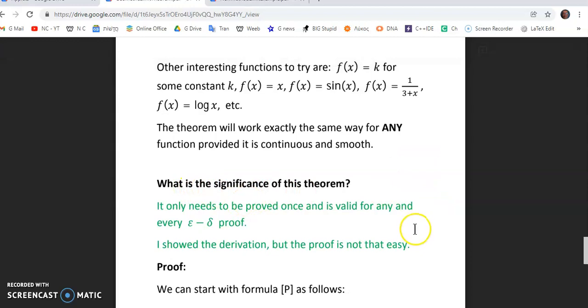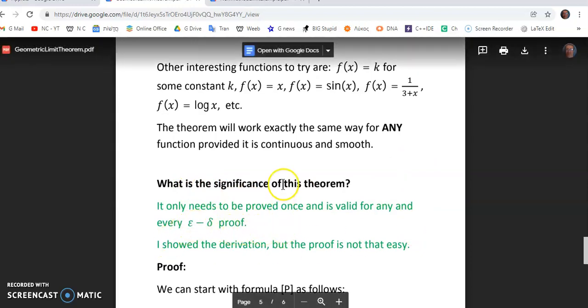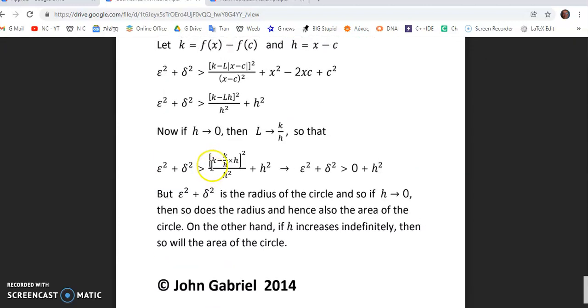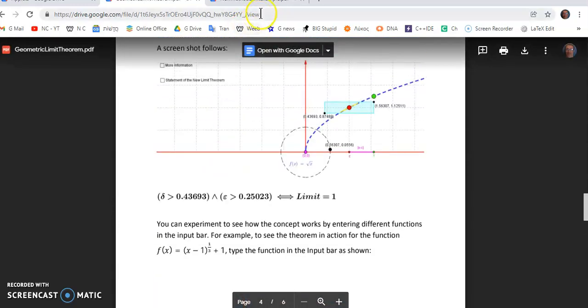The significance of this theorem is that it only needs to be proved once and is valid for every epsilon delta proof. The proof is easy if you look at it in this form, and I'll place a link in the detail section. I don't want to spend much time with this garbage.